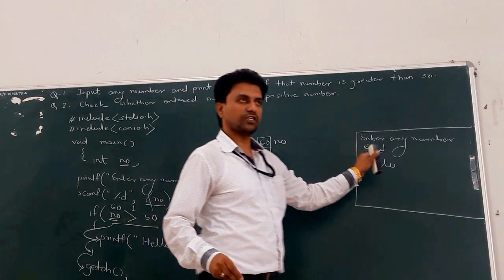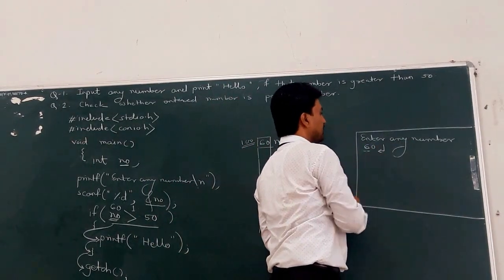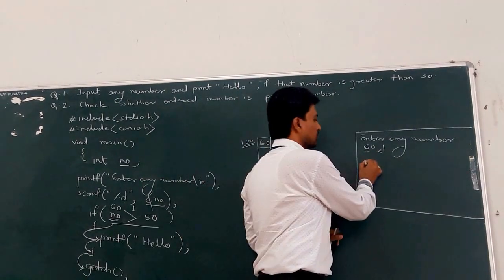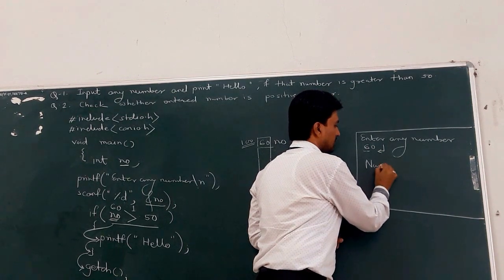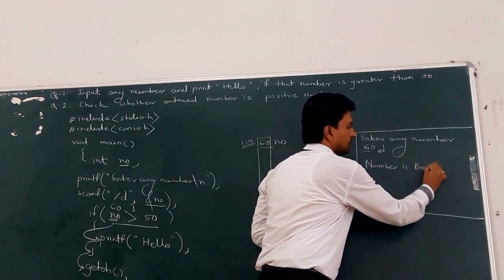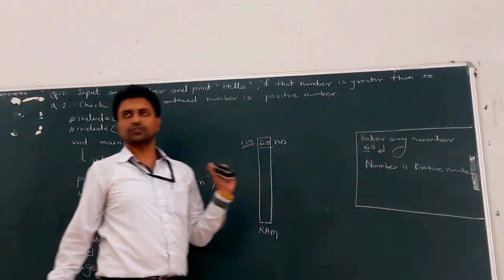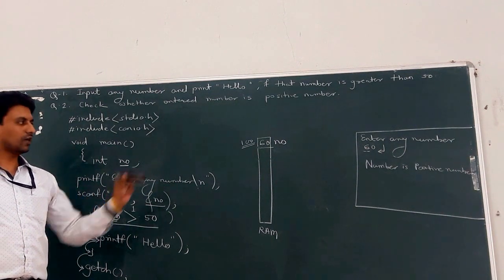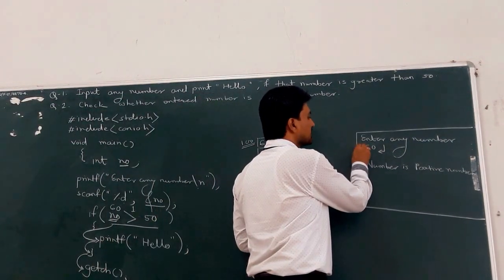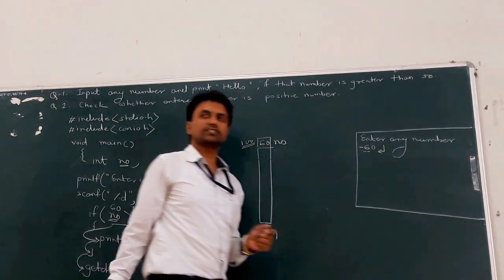What is the output? The message says 'enter a number.' If the user enters 60, that number is positive, so the output is 'number is positive.' If the user enters -60, there is no message on the text mode window. This is your expected output.